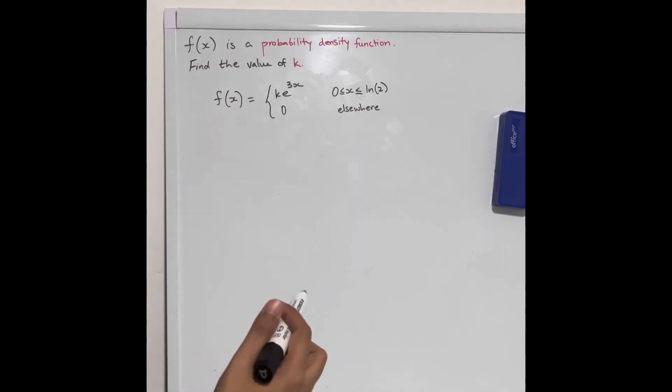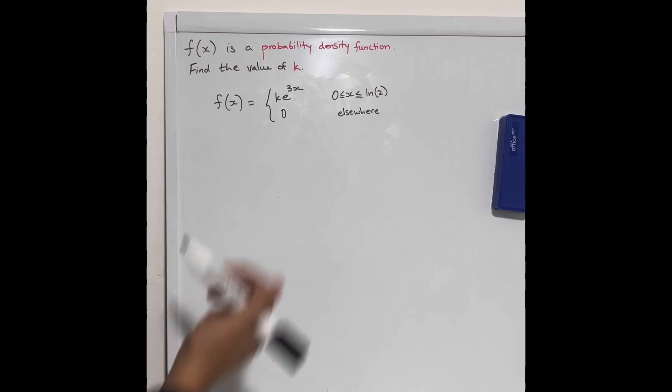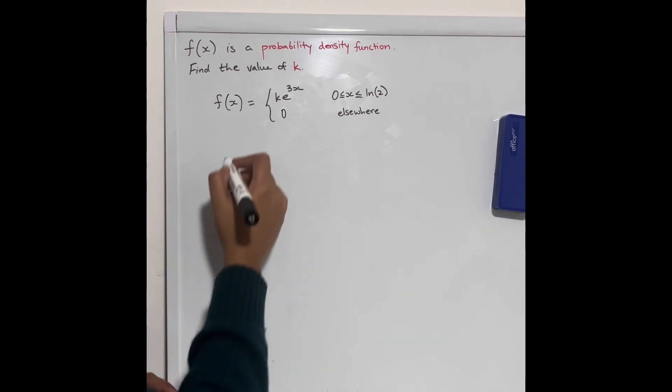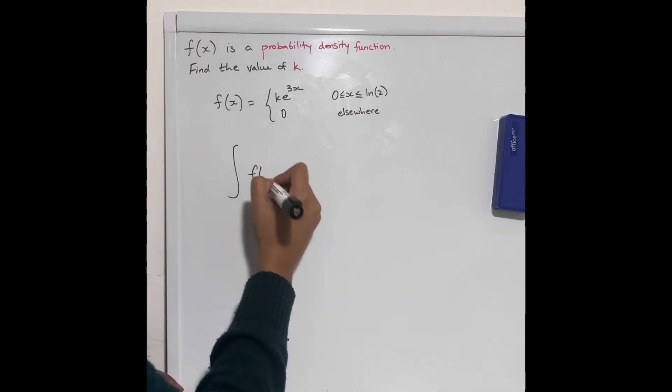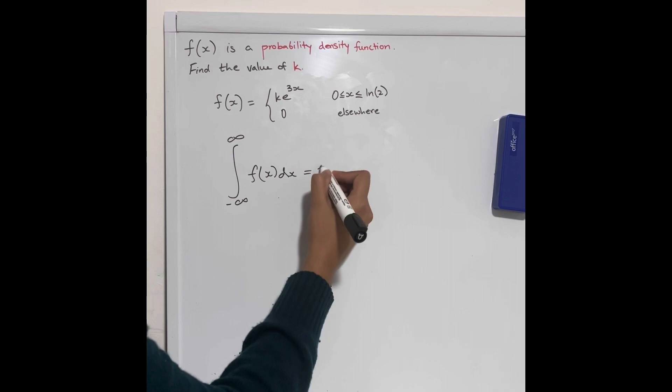f of x is a probability density function. Find the value of k. The first thing to remember about probability density functions is when you integrate your f of x from negative infinity to infinity, that will always equal 1.